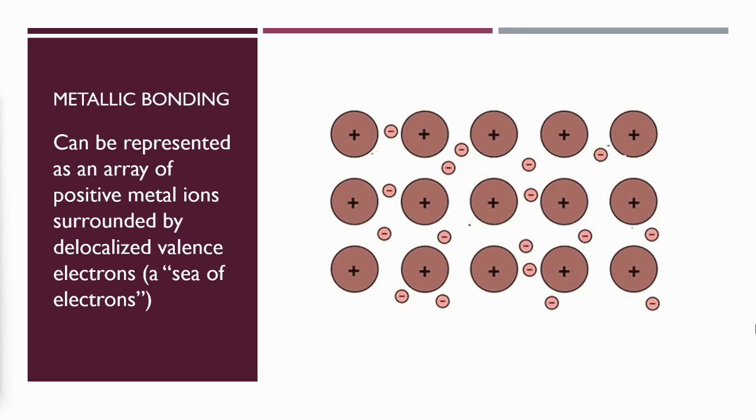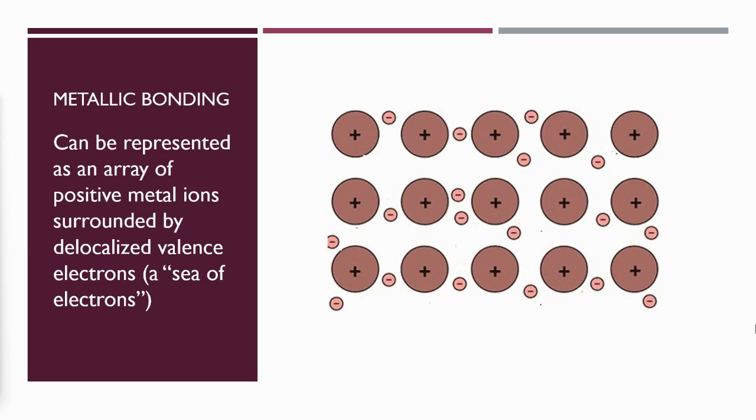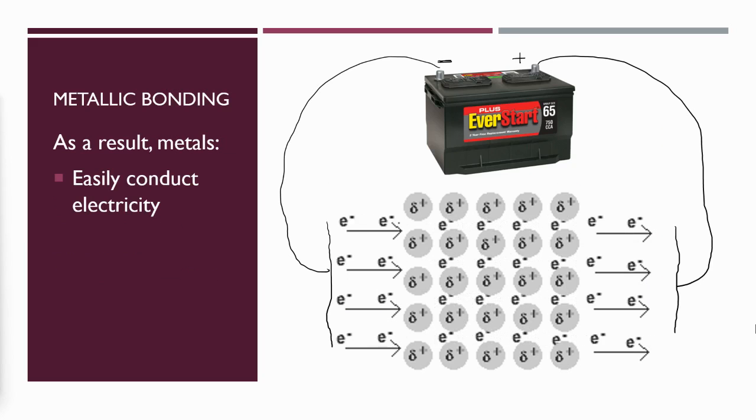This flow of electrons is what gives rise to metals' unique properties. One of those unique properties is the ability to conduct electricity. Because the electrons can move from atom to atom, if we place an electric field around the metal, the electrons will flow from the negative side of that electrical field towards the positive side. The movement of charge is what we define as electricity, so metals conduct electricity because charges can flow in one direction from one side to another in an electrical field.